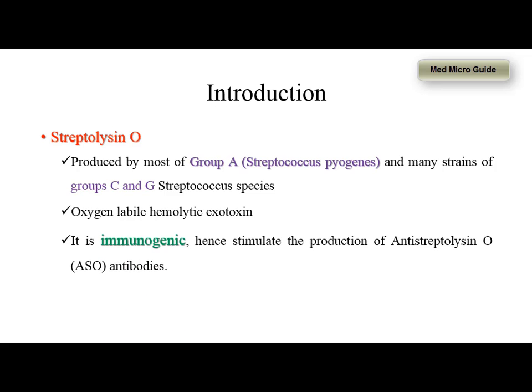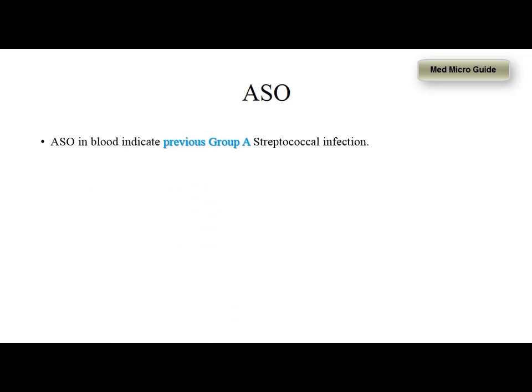Streptolysin O is highly immunogenic and hence it stimulates the production of anti-streptolysin O antibodies. The presence of anti-streptolysin O antibodies in the blood indicates a previous group A streptococcal infection. Almost 3 to 6 weeks is required for the ASO to be formed after the infection.